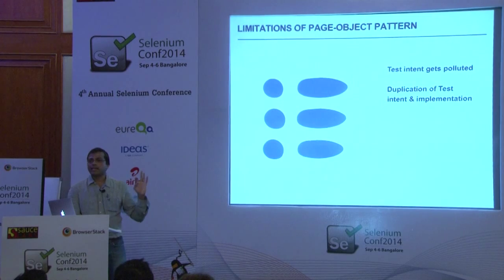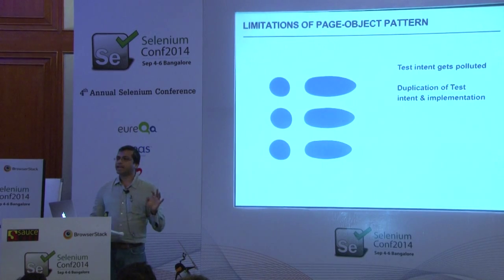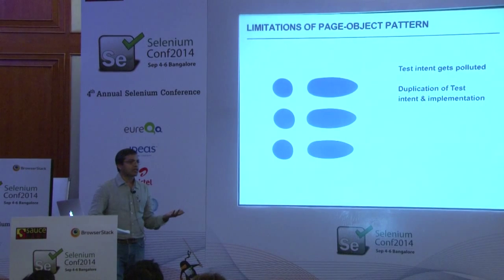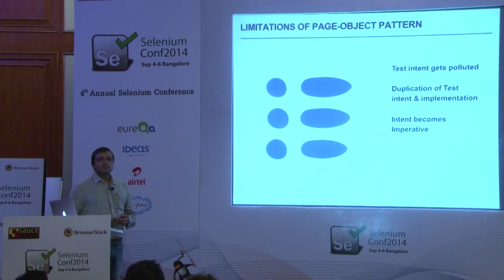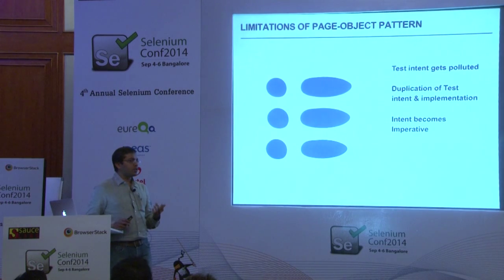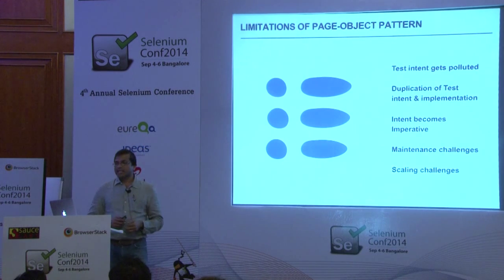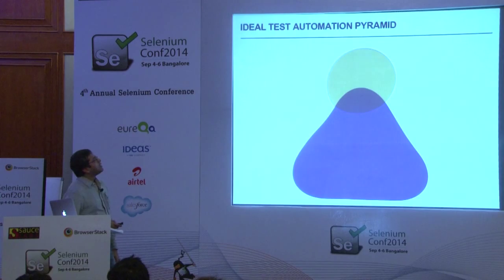By the way, one of the things I hate the most — which I think should be a rule — is that Ctrl+C and Ctrl+V should be disabled in the IDEs. That causes the biggest pain in test frameworks because it's easy, it's a shortcut. The intent becomes imperative — you start thinking in terms of user actions or UI actions, not in terms of business value. As a result, we get the maintenance challenges and scaling challenges we've already spoken about.